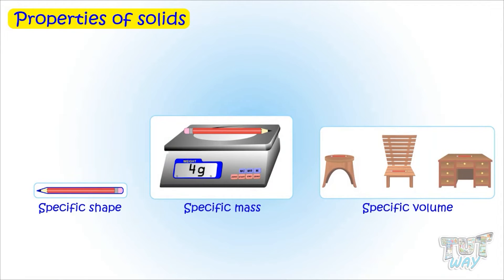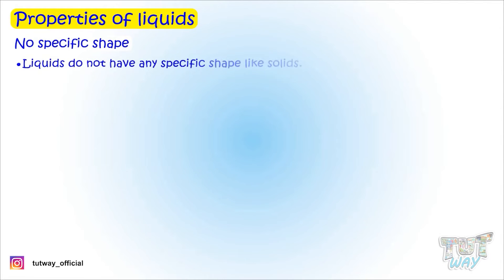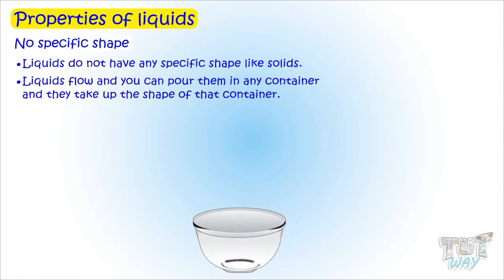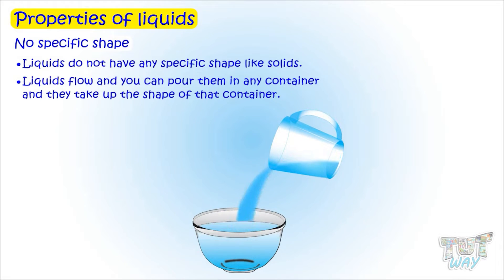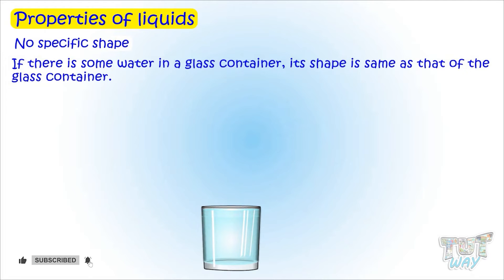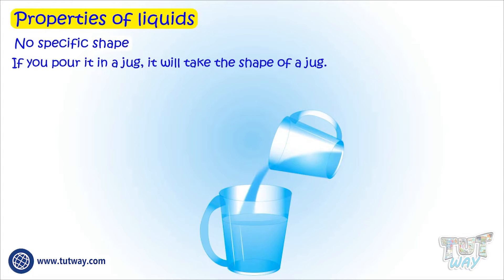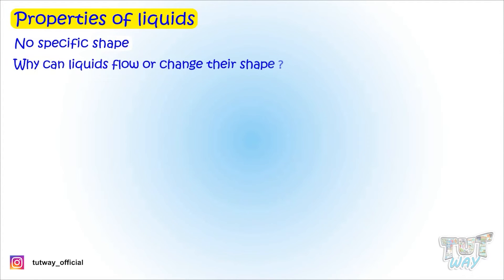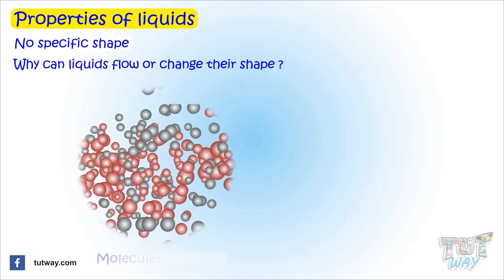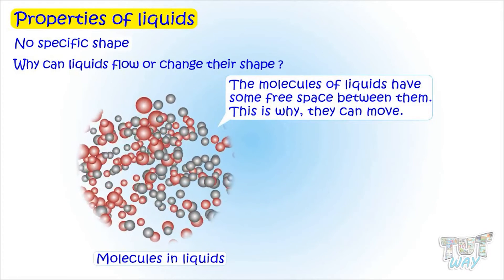Now let's learn about the properties of liquids. Liquids do not have a specific shape like solids. Liquids flow and you can pour them into any container and they take up the shape of that container. If there is water in a glass container, its shape is the same as the glass container. If you pour the same water into a bowl, it takes the shape of the bowl; in a jug, it takes the shape of the jug. The molecules of liquids have some free space between them, which is why they can move and flow.